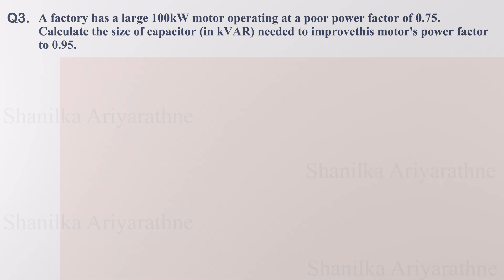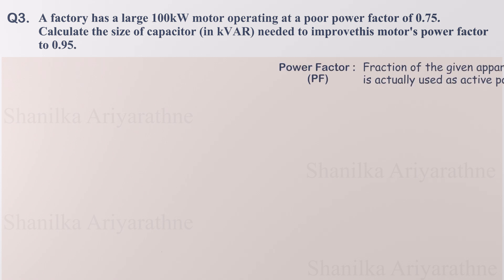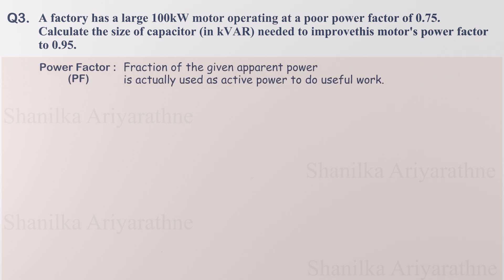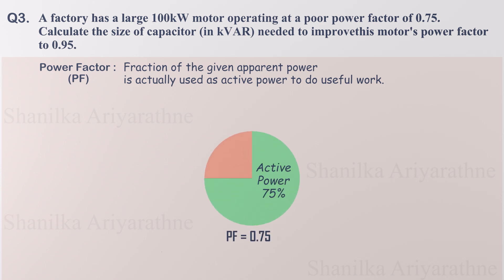Power factor represents the fraction of power we actually get useful work done from the given apparent power. Currently, our motor converts only 75% of the apparent power into useful mechanical work. The remaining power goes into maintaining the magnetic fields necessary for the motor's operation — our reactive power.